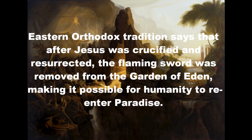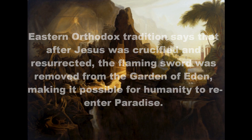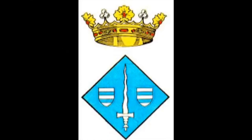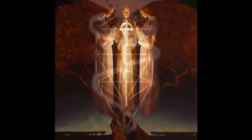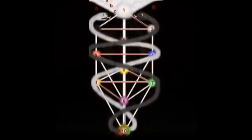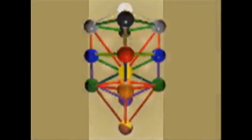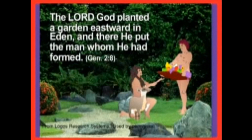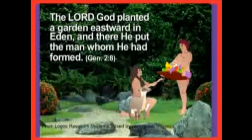Eastern Orthodox tradition says that after Jesus was crucified and resurrected, the flaming sword was removed from the garden of Eden, making it possible for humanity to re-enter paradise. The Bible has much to say about the cherubim stationed at the east of the garden of Eden when Adam and Eve were exiled, and the flaming sword that was there with them. In the garden of Eden, they were allowed to eat the fruit of any of the trees except the fruit on the tree of knowledge of good and evil.